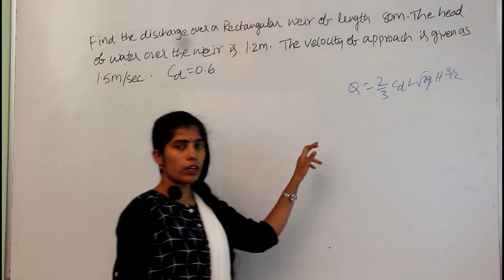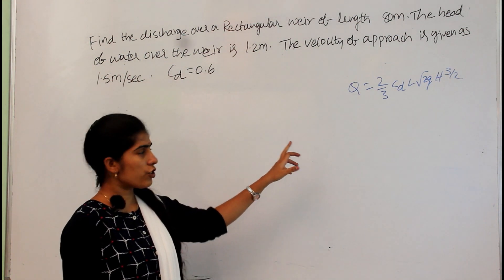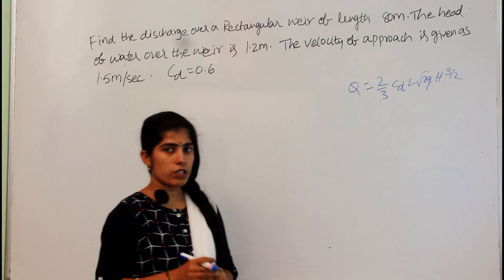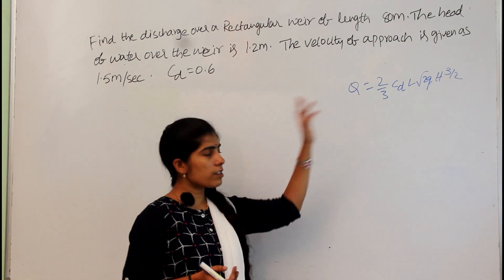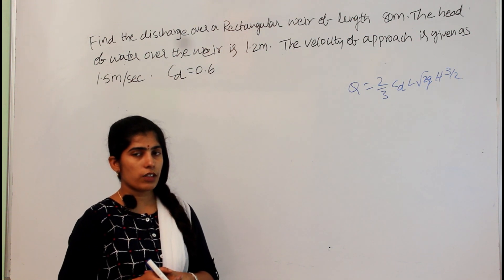But I already said when we are deriving this equation, this discharge equation without velocity approach. When there is no velocity approach, this is the discharge equation for the rectangular weir.